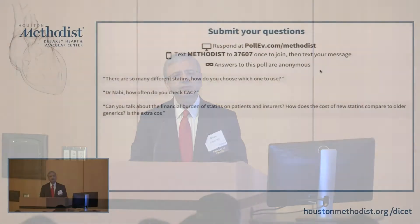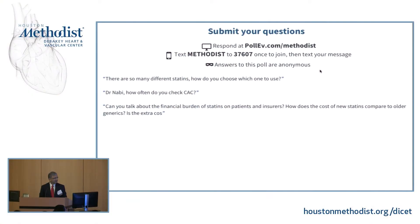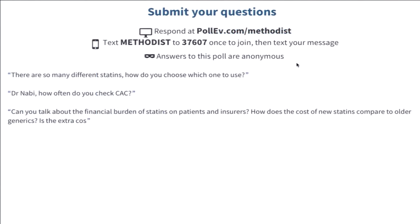Dr. Naby, how often do you check calcium? What are the recommendations — is it every five years? There are a couple of questions. Personally, I am a believer, so I frequently order it. If you stick with what the guidelines recommend, the guidelines recommend it as a 2B indication — that is when you are unsure of your risk stratification after you've used the pooled cohort equation, or as Dr. Jones noted, there are other factors not taken into account in that equation.